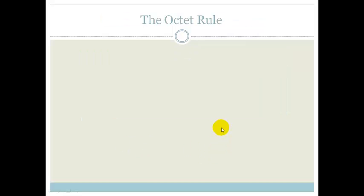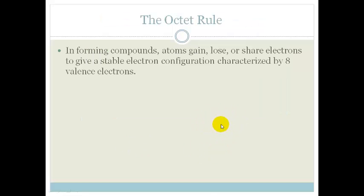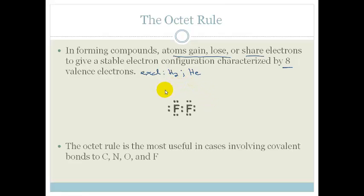So the octet rule. What we've actually done is we've been obeying the octet rule except for the hydrogen. In forming compounds, atoms gain, lose or share electrons to give a stable electron configuration characterized by 8 valence electrons. Obviously there are exclusions. The exclusions for this are your hydrogen and your helium because they only want 2 electrons in their outer energy shell. If we look at this we can see that your fluorine has got 1, 2, 3, 4, 5, 6, 7, 8 around that fluorine.